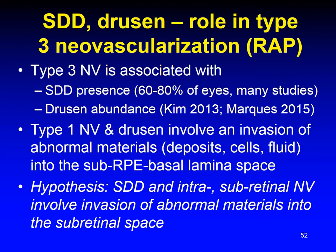We do know about SDD and drusen and their role in type 3 neovascularization, which is also called retinal angiomatous proliferation. Type 3 neovascularization is associated with SDD presence in a very high proportion of eyes, shown in many studies, but drusen are also present. Type 1 neovascularization and drusen involve an invasion of abnormal materials, deposits, cells, and fluids into the sub-RPE basal laminar space.